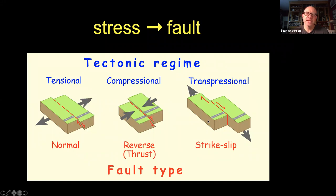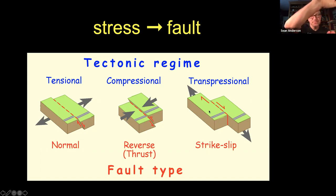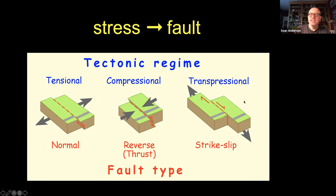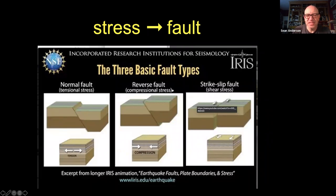The San Andreas runs from basically Baja up through northern California and goes out to sea north of San Francisco. The Pacific plate is moving northwestward and the North American plate is moving southeastward. Let's look at a short video illustrating some of these fault types.